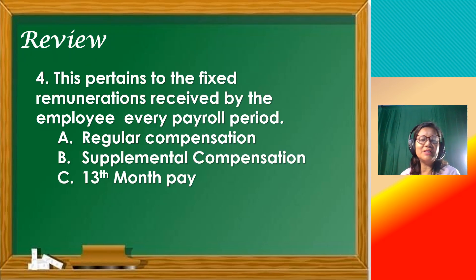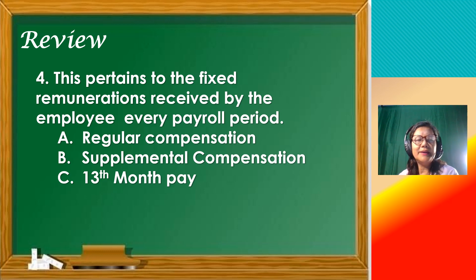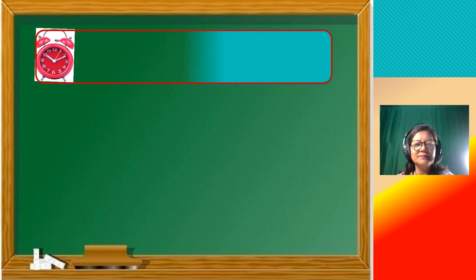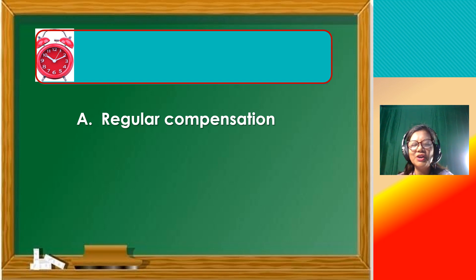Last question. Number 4: this pertains to the fixed remunerations received by the employee every payroll period. Is it A, regular compensation? Is it B, supplemental compensation? Or C, 13-month pay? What is your answer for number 4, the last item? If your answer is letter A or regular compensation, you are correct.